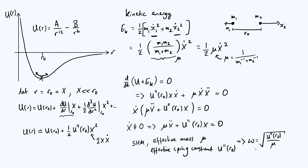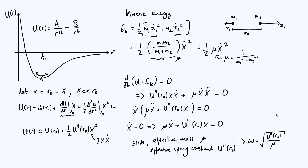We have found the angular frequency of small oscillations of a diatomic molecule. If you wanted to evaluate this numerically, you could use the functional form of U(r) — such as the Lennard-Jones potential — to calculate r₀ using calculus, find the second derivative of U at R₀, and plug those values into the formula to get an actual number.